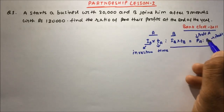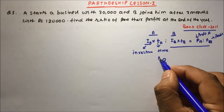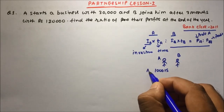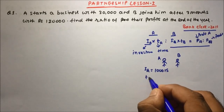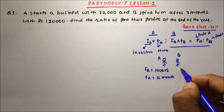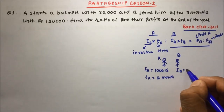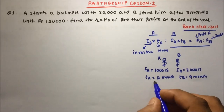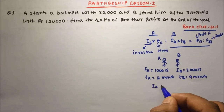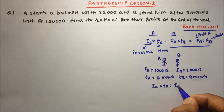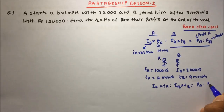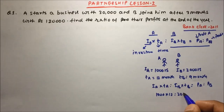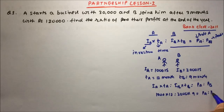Let's understand the formula. Suppose there are two partners, Partner A and Partner B. A is investing 1000 rupees for 12 months, and B's investment is 2000 rupees for 9 months. Then the investment × time ratio will equal the profit ratio: 1000 × 12 : 2000 × 9 = Profit of A : Profit of B.